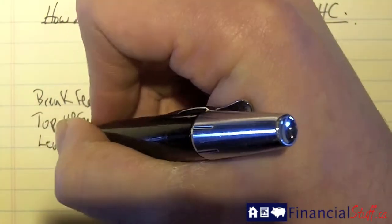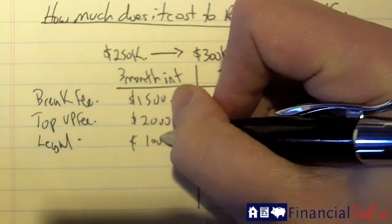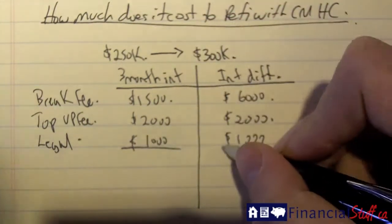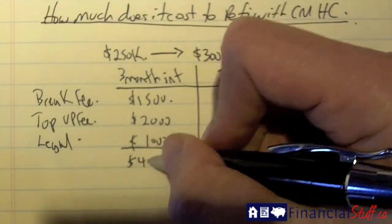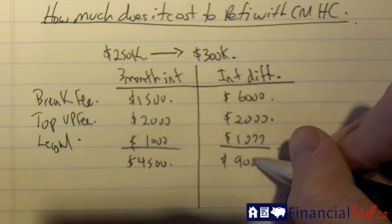Then, you've got to pay a new legal fee, which would be $1,000. Depending on what the current mortgage situation is, to break this mortgage will cost $4,500 in total cost, and to break this would be $9,000.